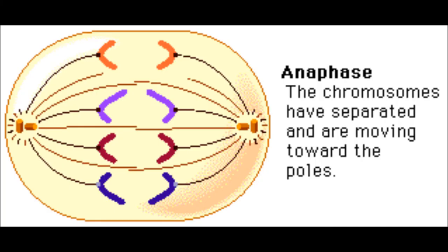The paired chromosomes separate at the kinetochores and move to the opposite sides of the cell. Motion results from a combination of kinetochore movement along the spindle microtubules and through the physical interaction of polar microtubules.